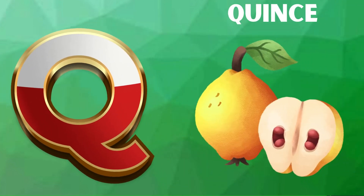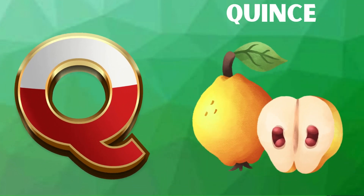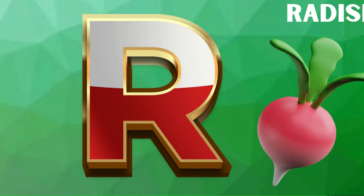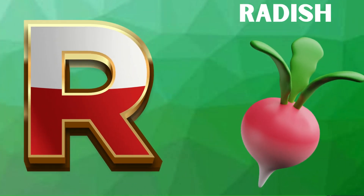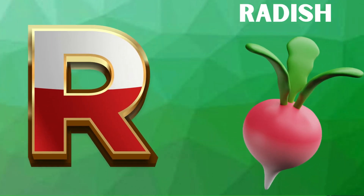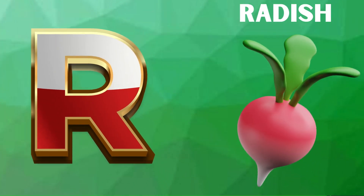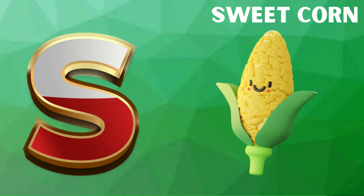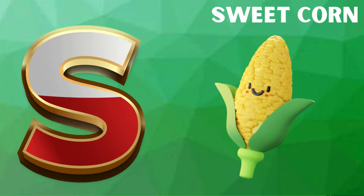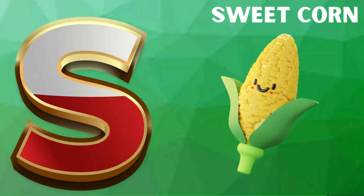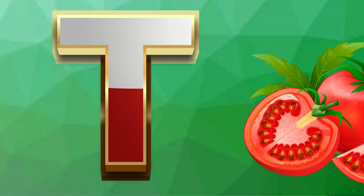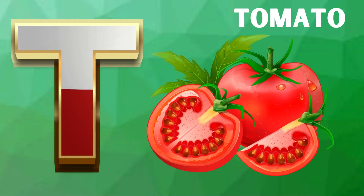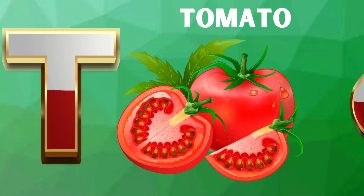Q is for quince, quh quh, quince. R is for radish, rr rr, radish. S is for sweet corn, suh suh, sweet corn. T is for tomato, tuh tuh, tomato.